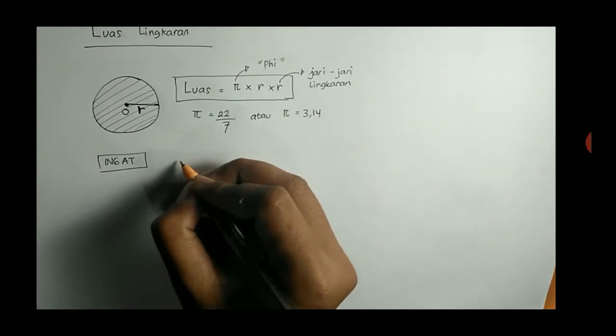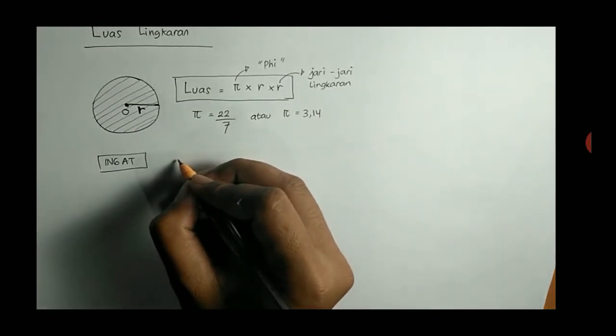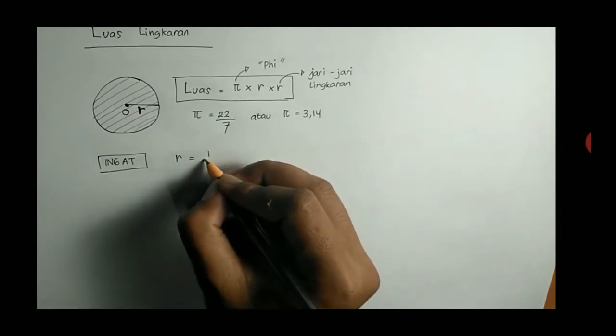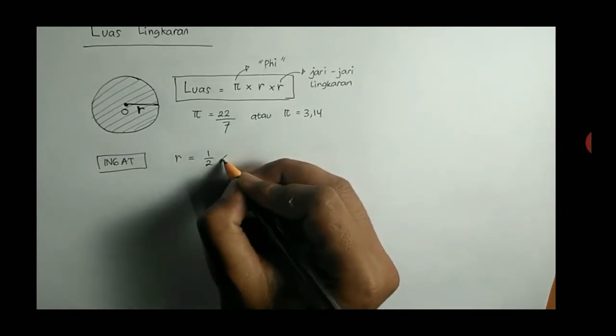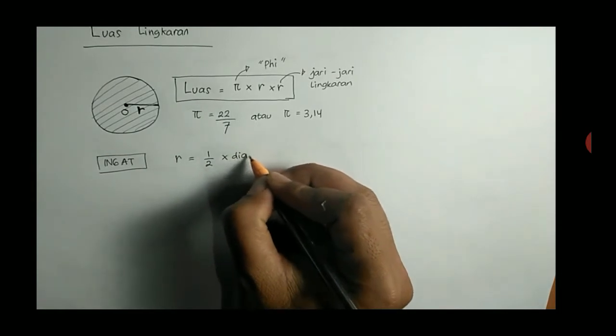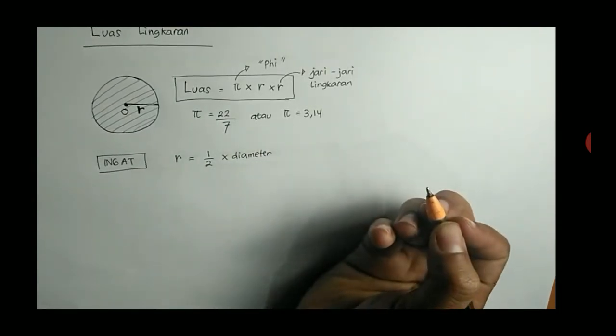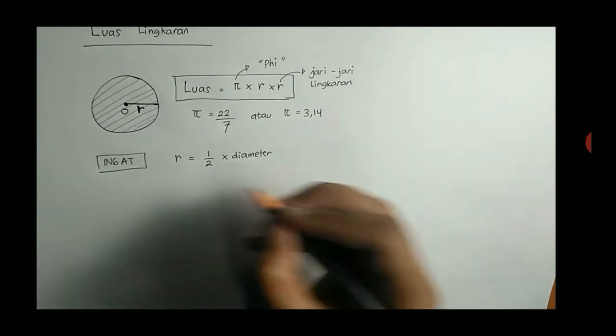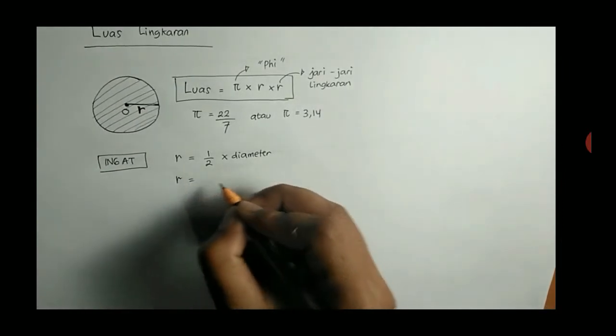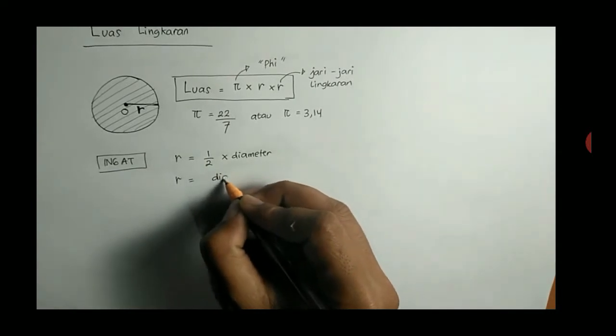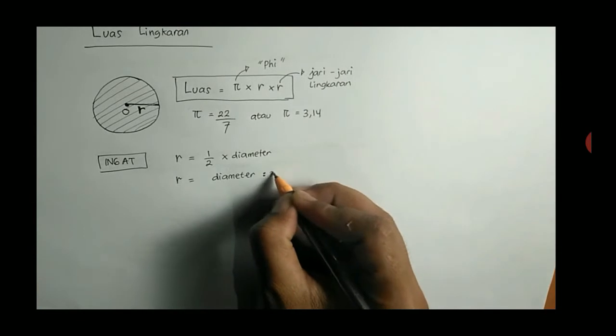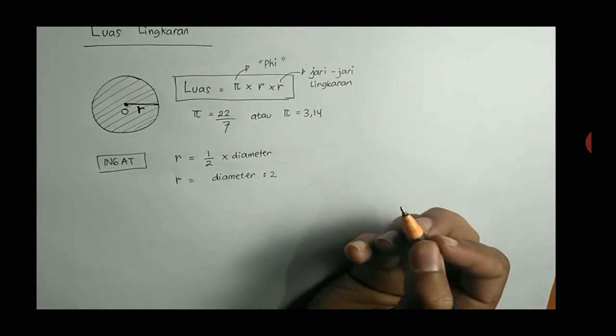Atau kalau dibalik, R itu berarti setengahnya diameter. Jadi diameter itu 2 kali jari-jari, kalau dibalik, berarti R itu setengahnya diameter. Atau diameter dibagi 2. Jadi setengahnya itu sama saja dibagi 2. Ini diingat.